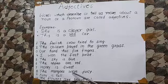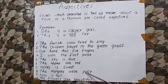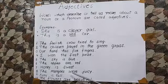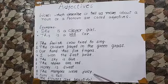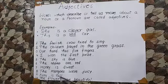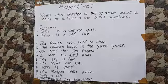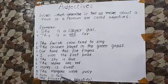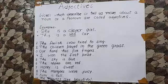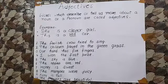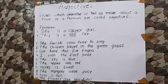The mangoes were juicy. Now juicy is describing the quality of the mangoes, so juicy is an adjective in this sentence. Ajay is tall. Now tall is describing about Ajay, and Ajay is a noun in this sentence, so tall is an adjective in this sentence. The flowers are beautiful. Now beautiful is describing the beauty of flowers, so beautiful is an adjective in this sentence.